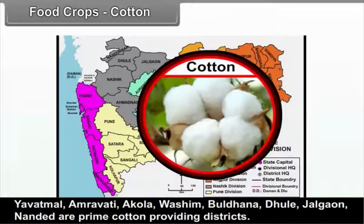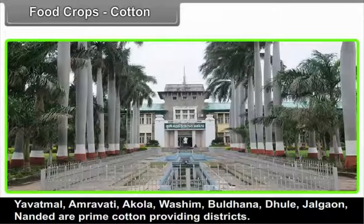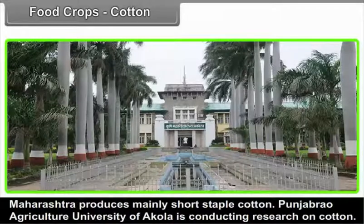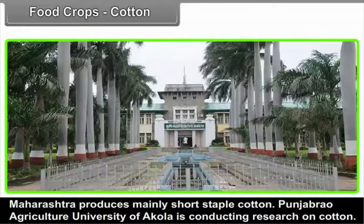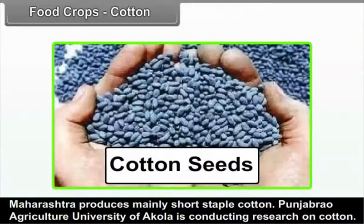Maharashtra produces mainly short staple cotton. Punjab Rao Agriculture University of Akola is conducting research on cotton and has been successful in developing seeds for Bt cotton and CAHS 468.